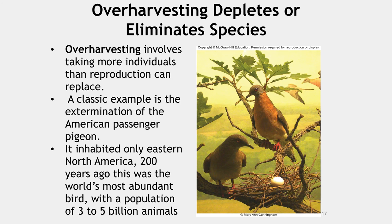Overharvesting involves taking more individuals than reproduction can replace. A classic example is the extermination of the American passenger pigeon, Ectopistes migratorius, even though it inhabited only eastern North America. 200 years ago, this was the world's most abundant bird with a population of 3 to 5 billion animals. In spite of this vast abundance, market hunting and habitat destruction caused the entire population to crash in only about 20 years, between 1870 and 1890. The last known wild bird was shot in 1900, and the last existing passenger pigeon, a female named Martha, died in 1914 in the Cincinnati Zoo. In this picture we see a pair of stuffed passenger pigeons.